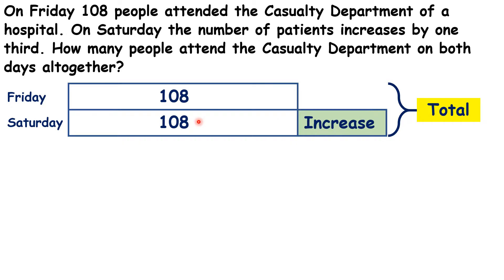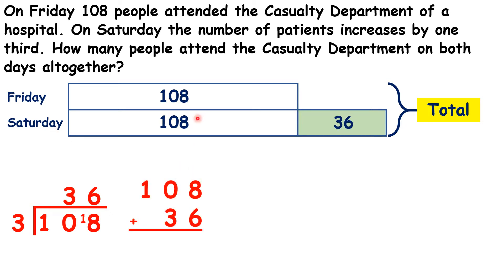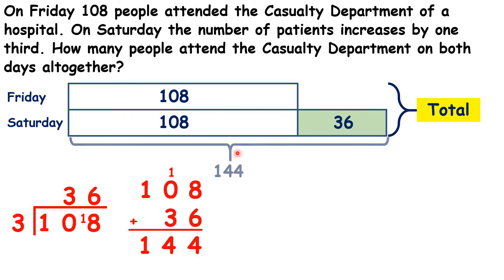First, how can we find the number of patients who attended on Saturday? Well, we have 108 plus one-third of 108. And to find one-third of 108, we divide it by three. That gives us an increase of 36 patients. So now we can work out how many attended on Saturday — that's 108 plus the increase of 36, which gives us 144. So 144 patients attended on Saturday.